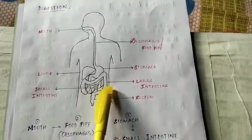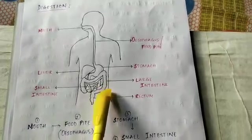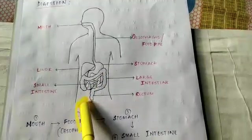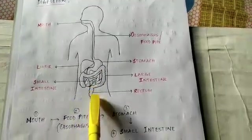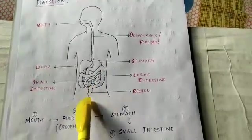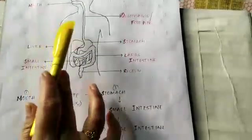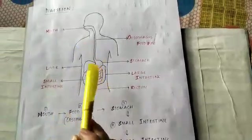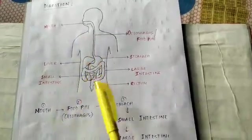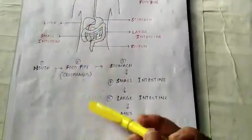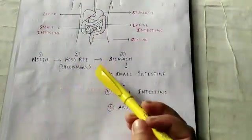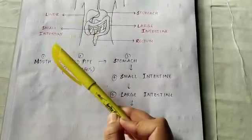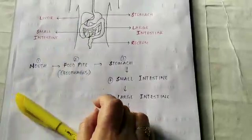Undigested food passes into the large intestine, where water and minerals are absorbed and waste is pushed out through the anus or rectum in the form of stools. This is the end of the lesson. I hope you will go through the clip and understand it well. Thank you.